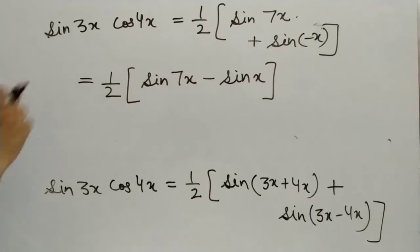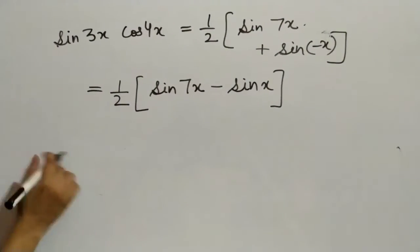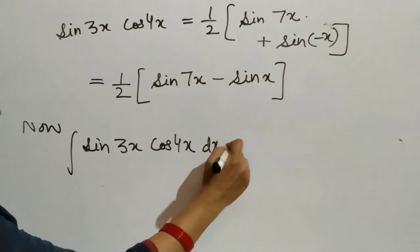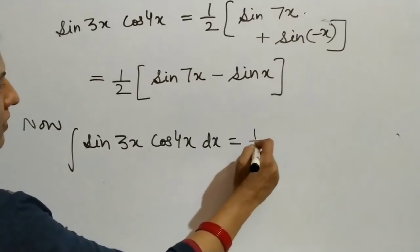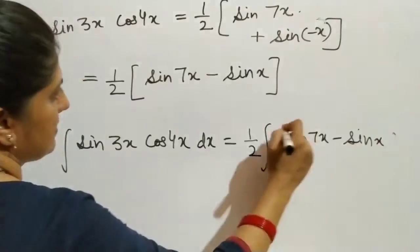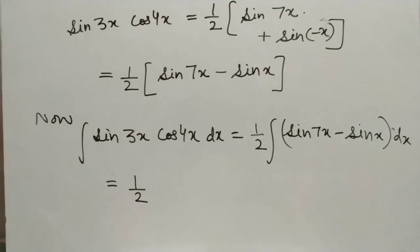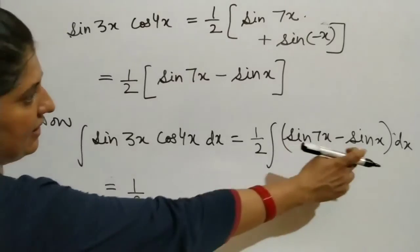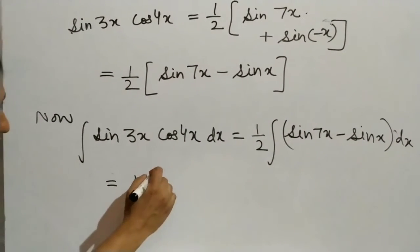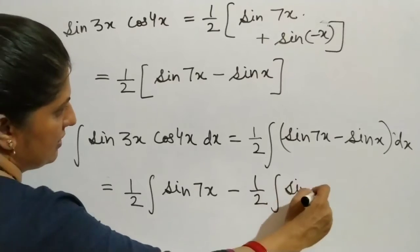Now we have to find the integral of the given function. Integral of sin 3x into cos 4x with respect to x is equal to 1 by 2 times the integral of (sin 7x minus sin x) with respect to x. We can separate the terms, giving 1 by 2 integral of sin 7x minus 1 by 2 integral of sin x.